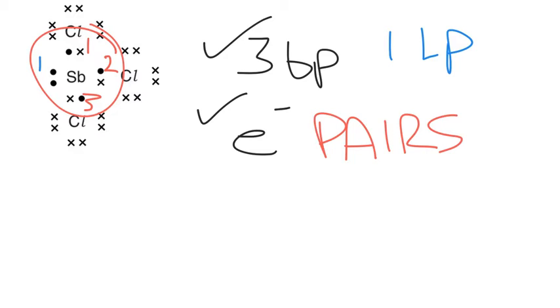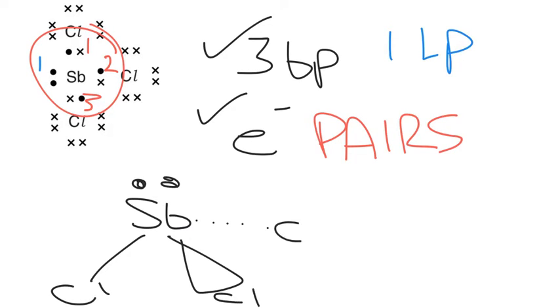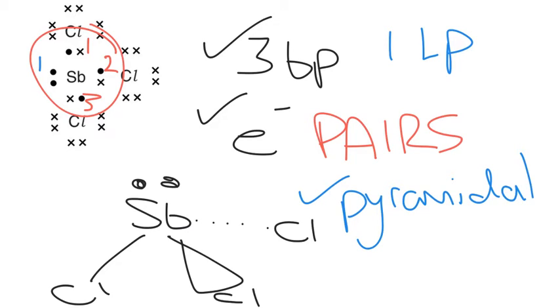The final mark is for naming the shape. The shape for this one you'd have the antimony in the middle like so, you'd have your lone pair at the top, you'd have these three bonds around the outside like so with a chlorine at the end of each one of them. And so this shape to get you this final mark is going to be pyramidal. There's no actual marks for drawing it, but I do want to have that diagram there so we can use it to explain the next part of this question.